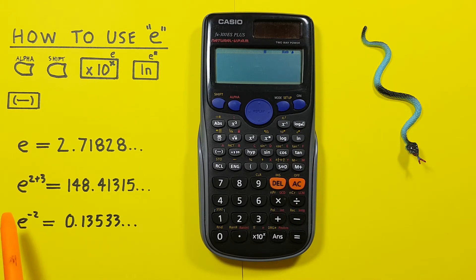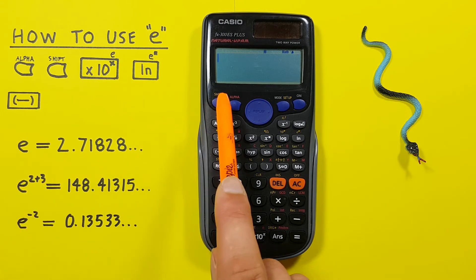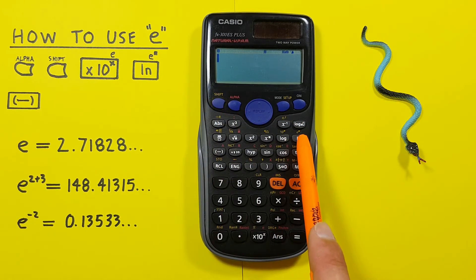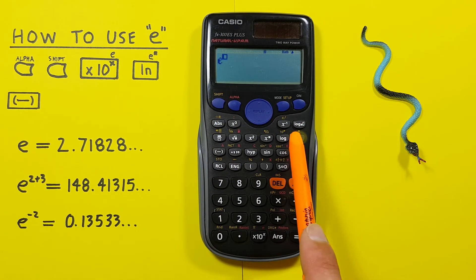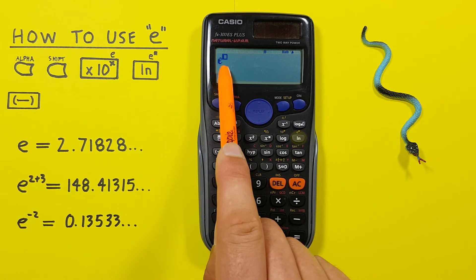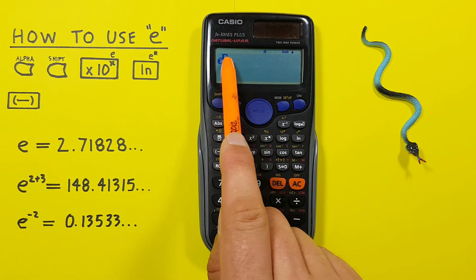If we want to get E to an exponent, like E to the power of 2 plus 3, we use shift and then the LN key with the shift function of E to the power of, and we see we get E on our screen with a box for our exponent.